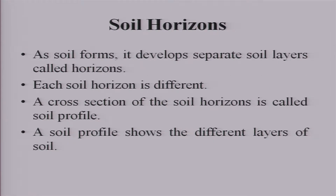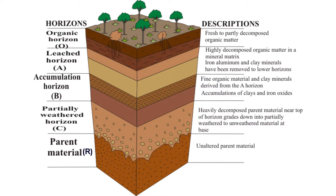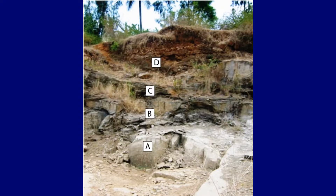In any well-developed soil, you can see different layers called horizons, and a cross-section of these is called a soil profile. The top layer is the O horizon — organic material and leaf litter. Below that is the A horizon, which is relatively less organic than O but richer than the B horizon. The B horizon is the zone of accumulation, where leaching from the A horizon deposits material. The C horizon is weathered soil with little organic material or life, and R is the unweathered parent material.